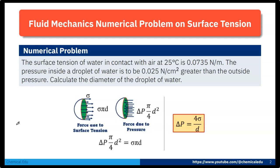The pressure inside a droplet of water is to be 0.025 Newton per centimeter square greater than the outside pressure. This means the pressure difference is given.